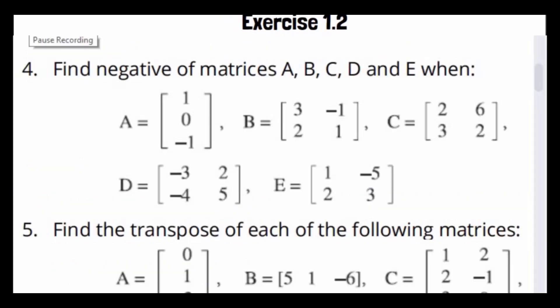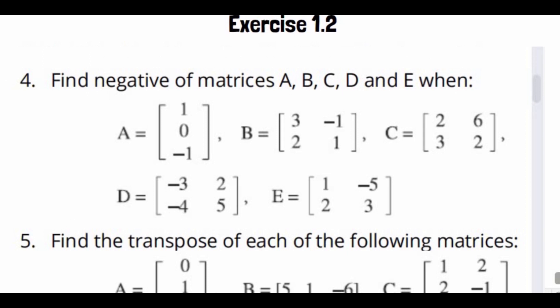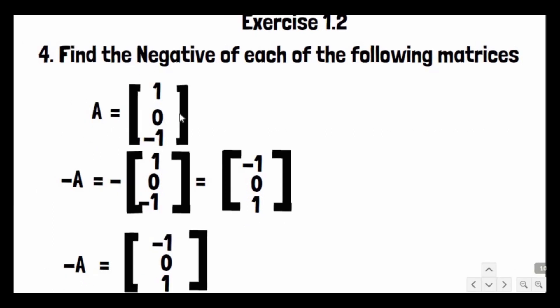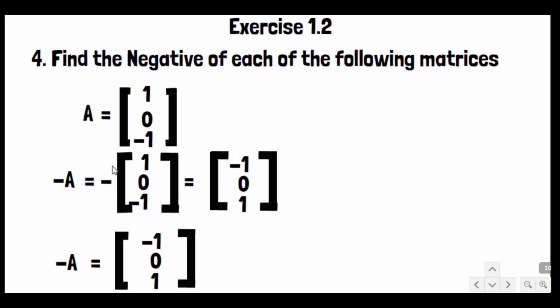Question No. 4: Find the negative of each of the following matrices. Matrix A is [1, 0, -1]. The negative matrix is obtained by changing the sign of all entries. So minus A equals [-1, 0, 1] — zero multiplied by minus remains zero, and minus one becomes one.